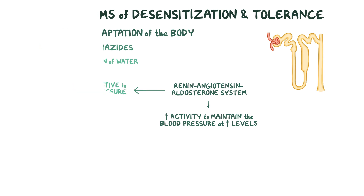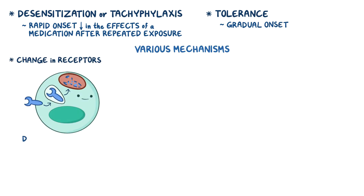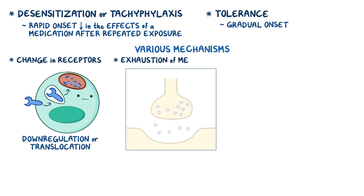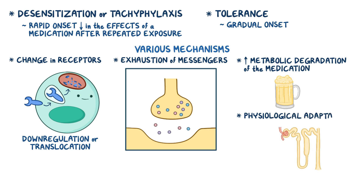As a quick recap: desensitization, or tachyphylaxis, refers to a rapid onset decrease in the effects of a medication after repeated exposure, whereas tolerance has a gradual onset. They arise from various mechanisms including a change in receptors — either downregulation or translocation — exhaustion of messengers, increased metabolic degradation of the medication, and physiological adaptation.